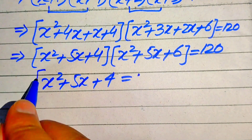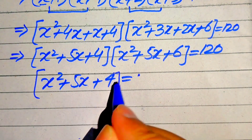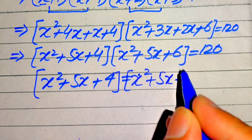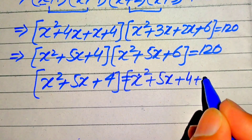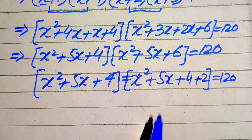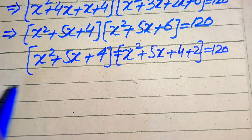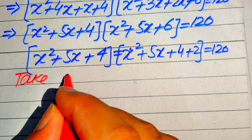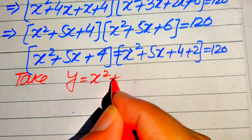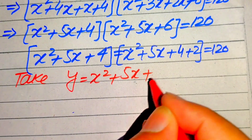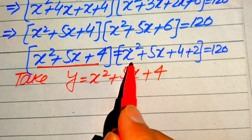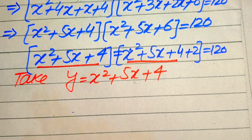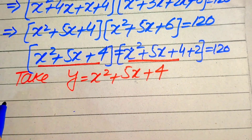We rewrite the two factors: (x² + 5x + 4) and (x² + 5x + 4 + 2), since we write 6 as 4 + 2. Now we let y = x² + 5x + 4, because this value is the common term appearing in both factors, so we take it as y.